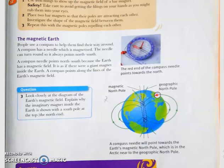People use a compass to help them find their way. A compass has a magnetized needle that can turn, and it always points in the north-south direction. Using a compass we can find direction. A compass needle points north-south because the Earth has a magnetic field — there is effectively a magnet inside the Earth.